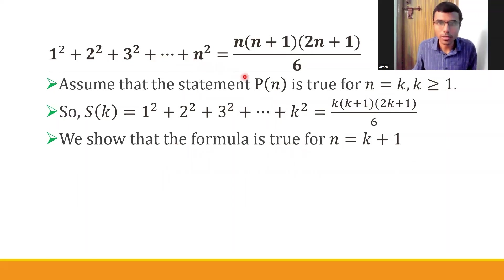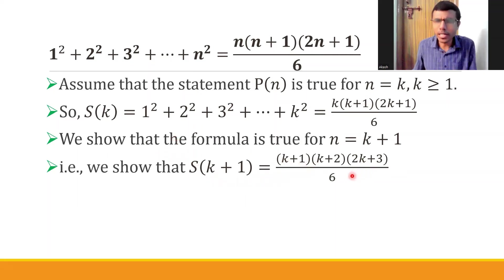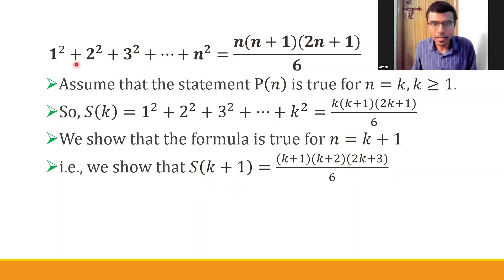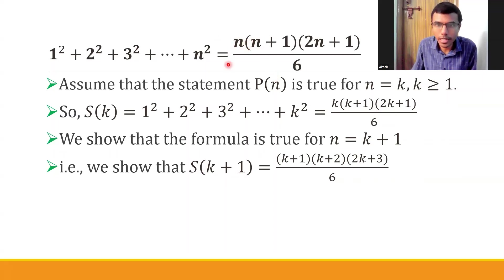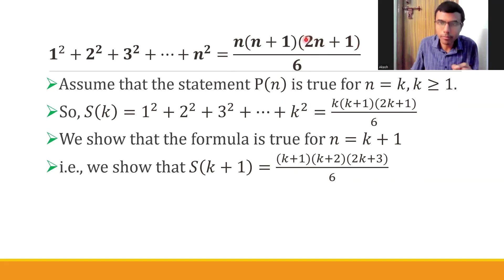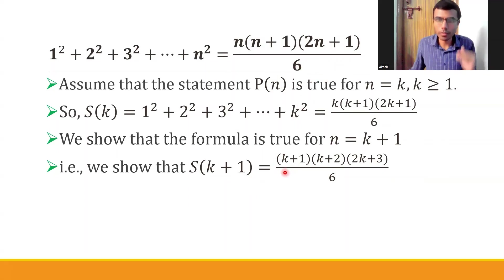Now we have to show that the formula is true for n equal to k + 1. That is, I have to show that S of k+1 equals the expression with k+1 substituted in. In the formula, replacing n with k+1 gives: (k+1), then k+1+1 = k+2, and 2(k+1)+1 = 2k+3. So I need to show S(k+1) = (k+1)(k+2)(2k+3) / 6.